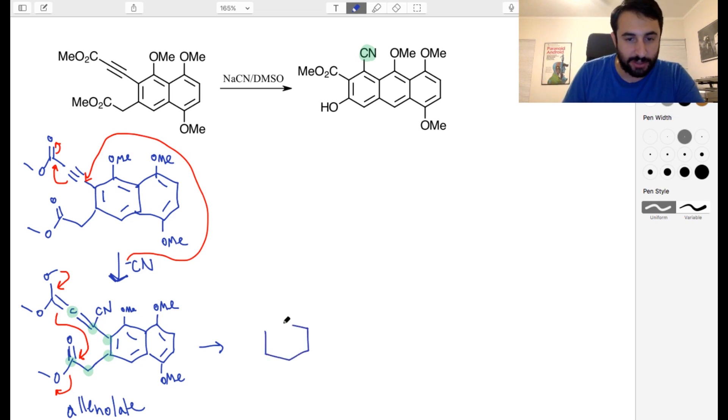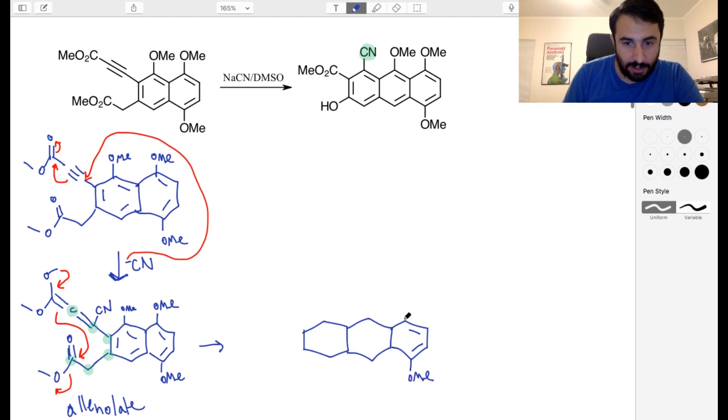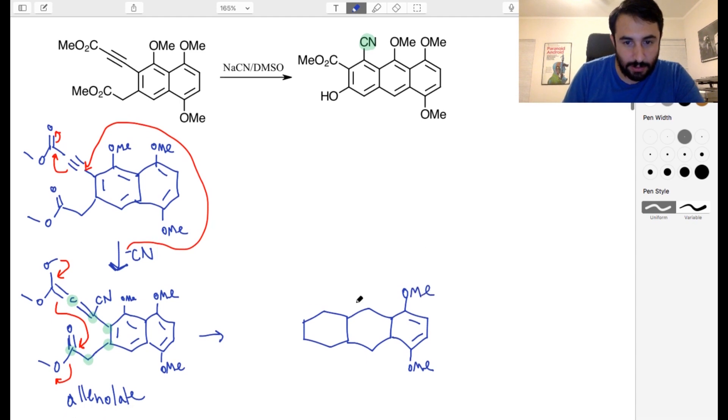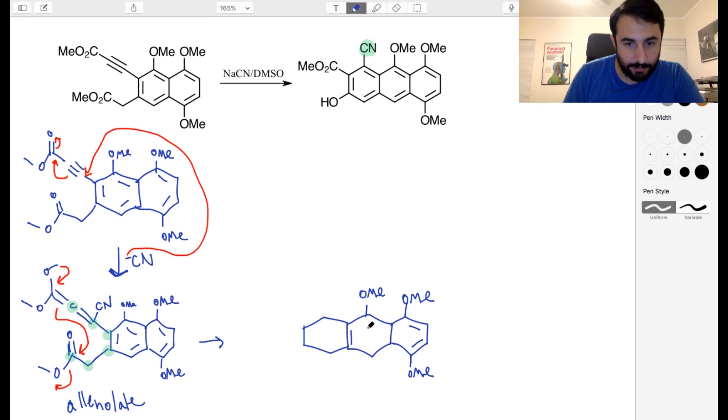So now we can draw all three rings. Actually, let me give myself a little more room. So let's see. We've got this there and this there. O-M-E. O-M-E. And we've got O-M-E. And we've got, so on this carbon, we have the C-N. And then we've got this pi bond right there. And then this carbon is the one that did the attacking. So that still has the ester group on there. And then this one, that got kicked off. So we've got the carbonyl. Okay.